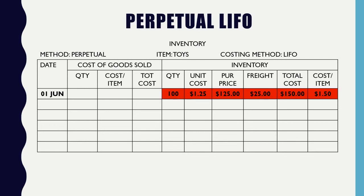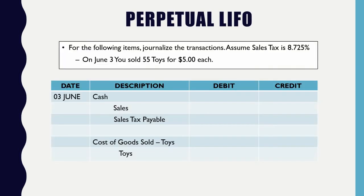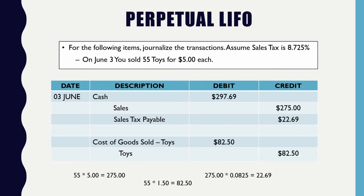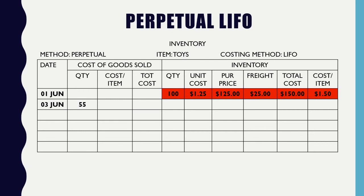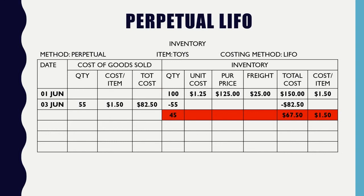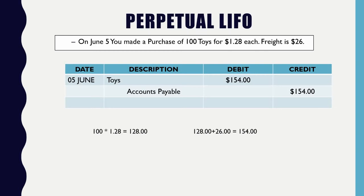That's my first batch, so I'm going to color code it. Then on June 3rd, we end up selling 55 toys. We're going to put it into our cost of goods sold — 55 units. Right now we only have one batch of inventory, so it's going to cost $1.50. That gives us $82.50. Subtract that from inventory, leaving 45 units remaining at $67.50.